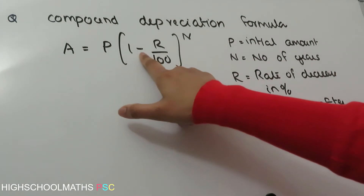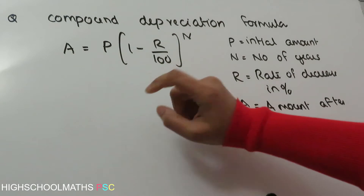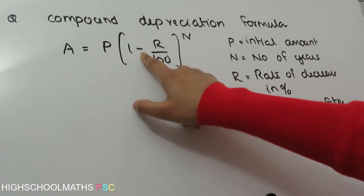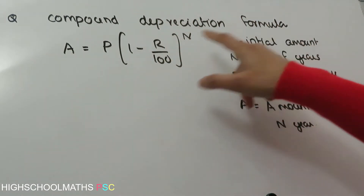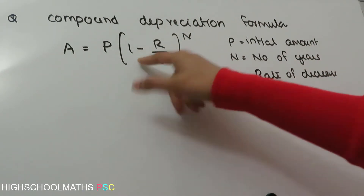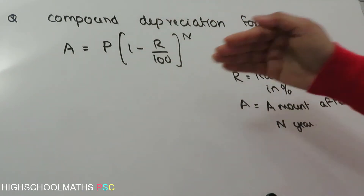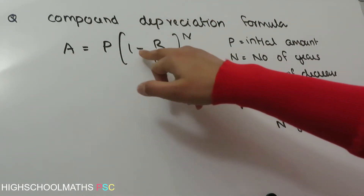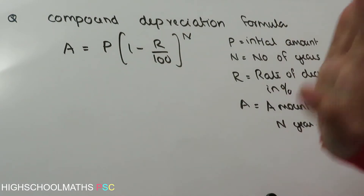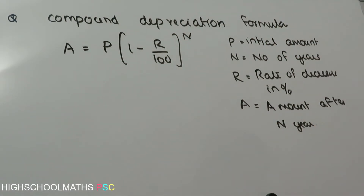This equation is similar to the Compound Interest equation. In the Compound Interest case we have a plus, but in this Depreciation Formula case we have a minus value.